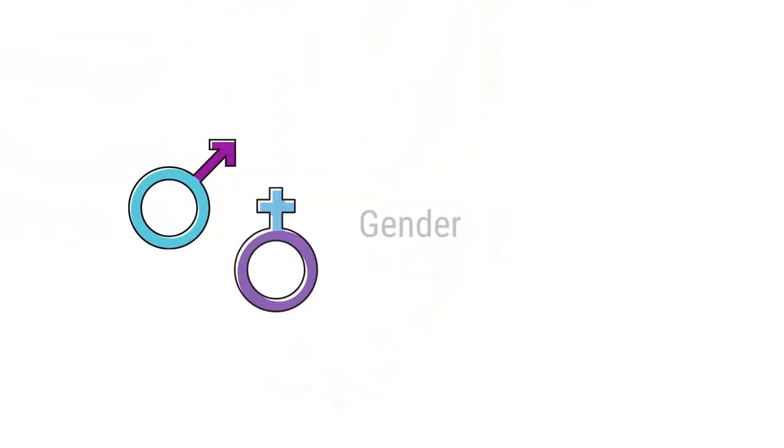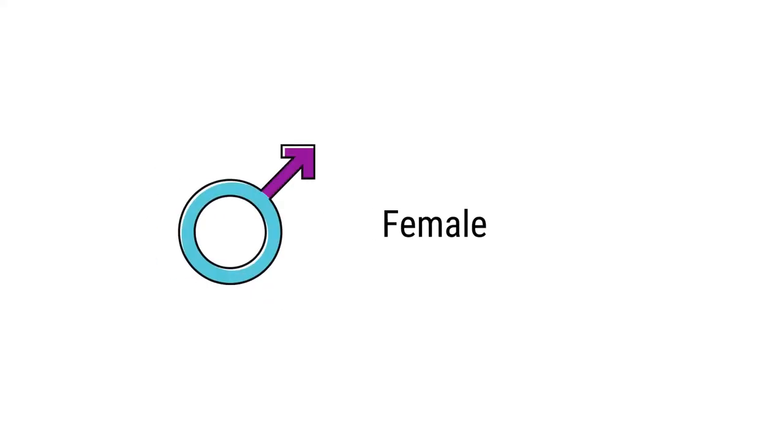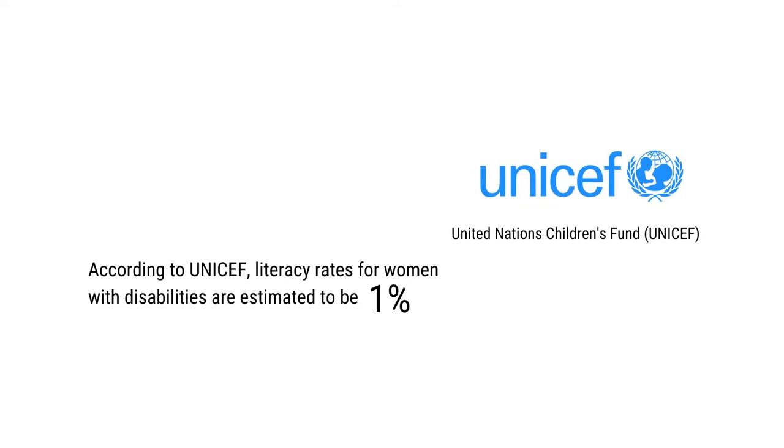The next factor contributing to disability disadvantage is gender, because in the case of women, disability becomes a double handicap. On the one hand, they are disadvantaged because of their gender, as society considers them inferior to men. Combined with disability, that becomes a double handicap, and the education of women with disabilities is considered negligible. The next factor is the lack of information in accessible formats.